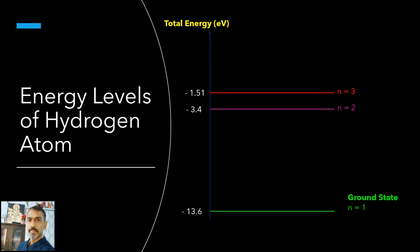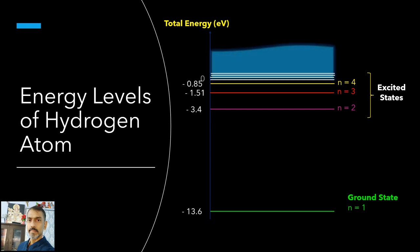At room temperature, most of the hydrogen atoms are in ground state. When a hydrogen atom receives energy by processes such as electron collisions, the atom may acquire sufficient energy to raise the electron to higher energy states. The atom is then said to be in an excited state.